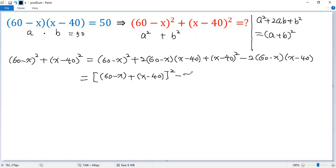And then minus 2, the product by the given condition is 50. Now, negative x plus x is cancelled. 60 minus 40 equals 20.